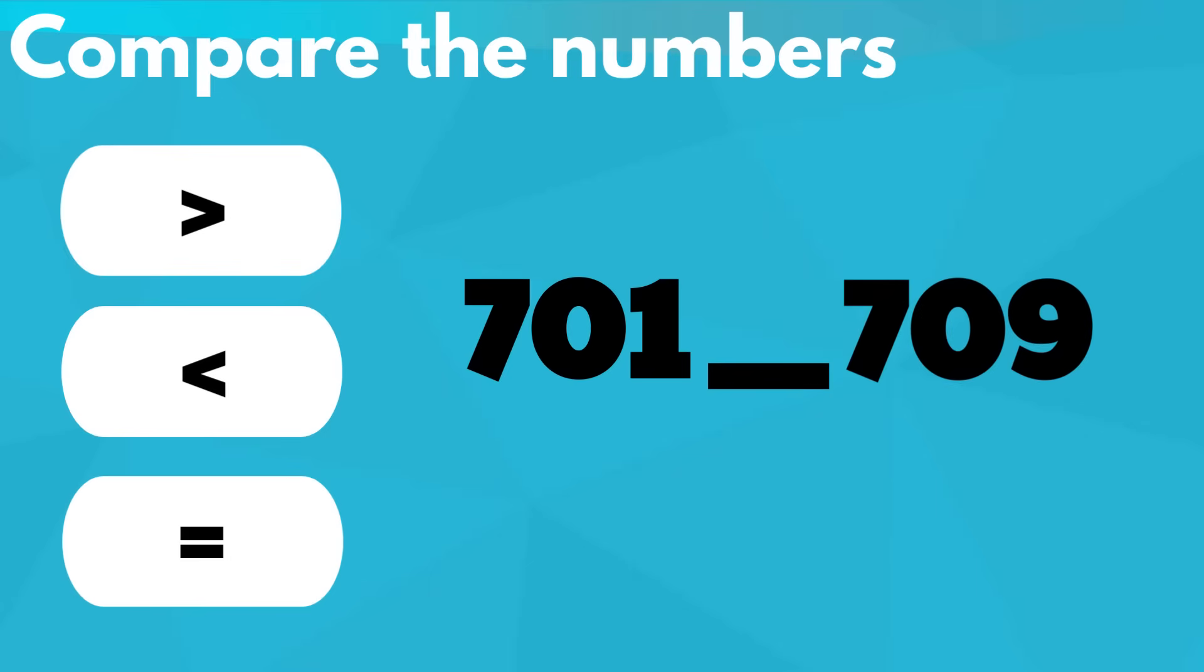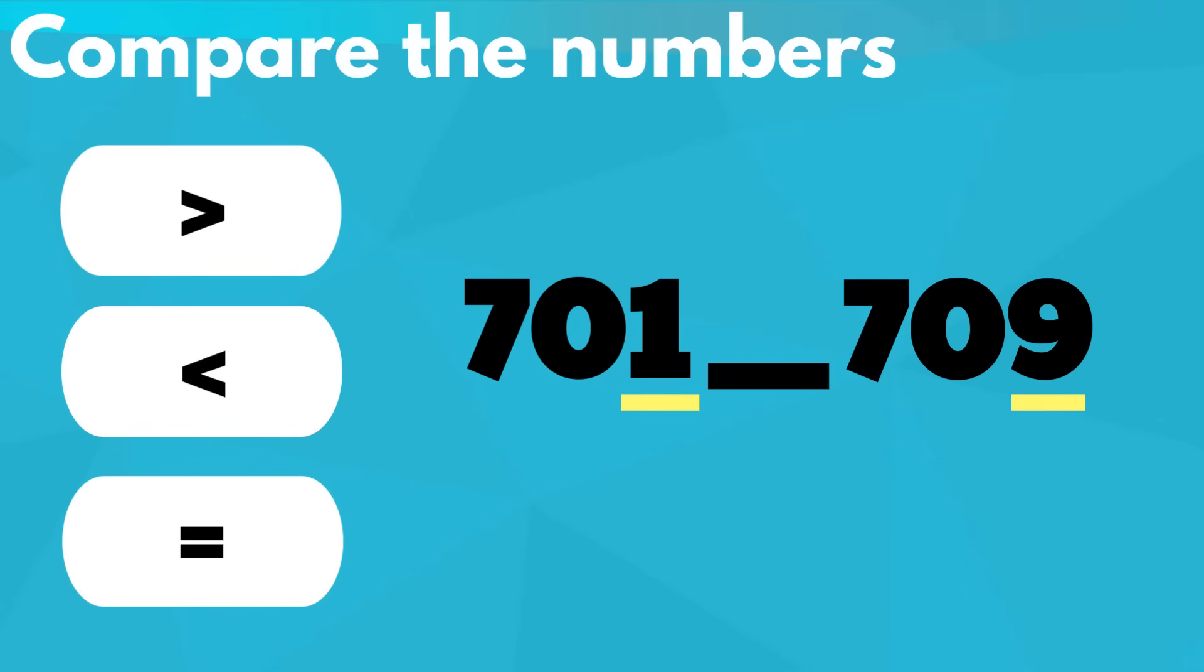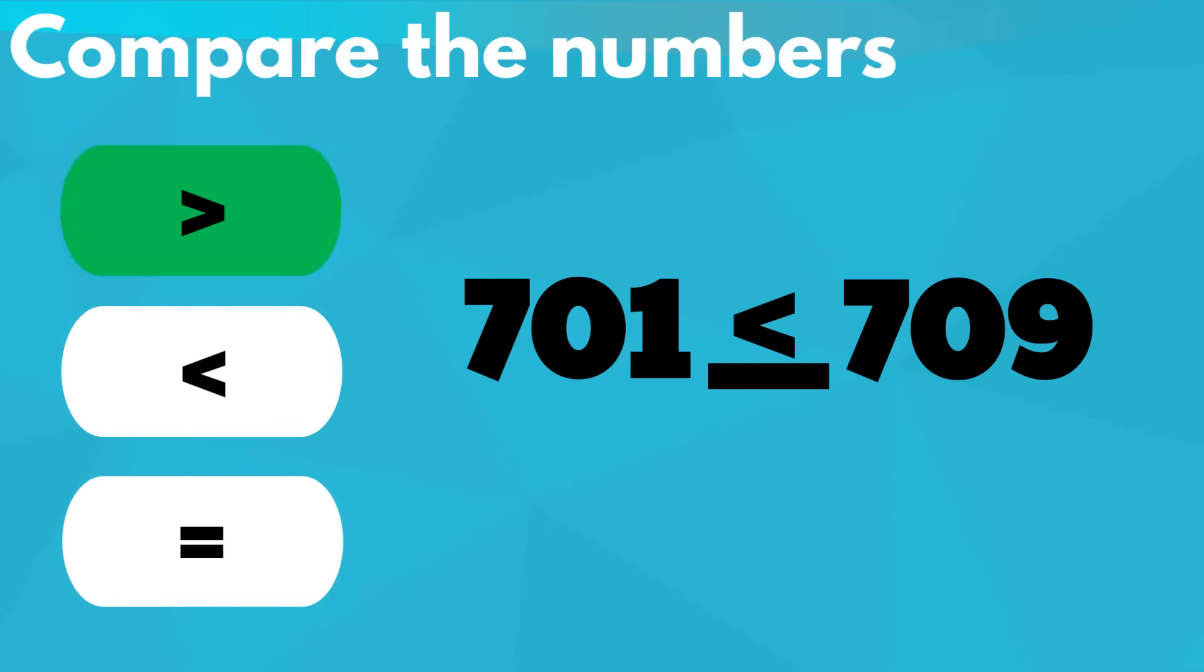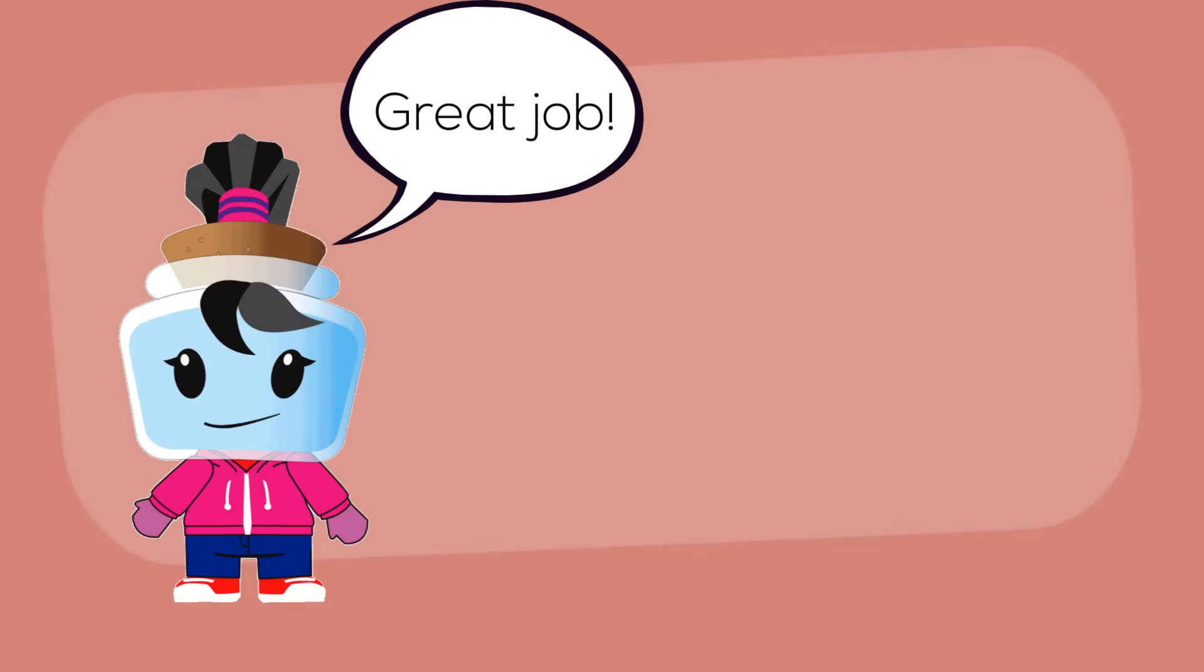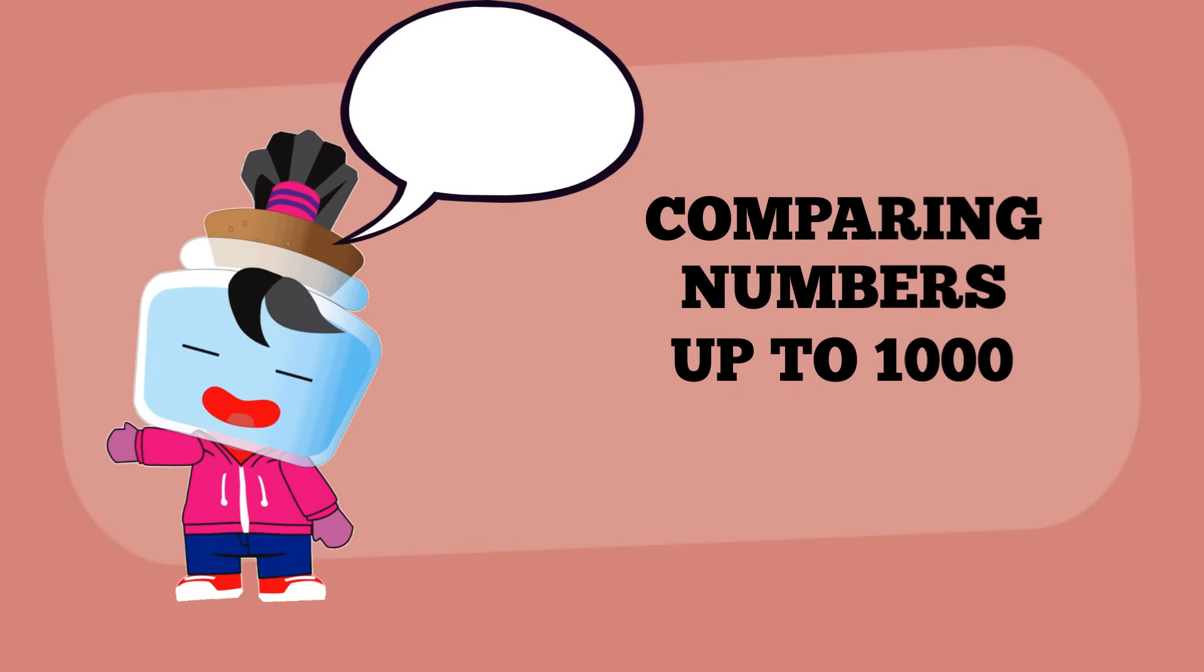Five: 701 and 709. The digits are equal in both the hundreds and tens place, so we look at the ones place. 1 is less than 9, so the answer is less than. Great job! I hope that helped make comparing numbers up to 1,000 a lot easier. Until next time!